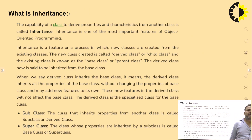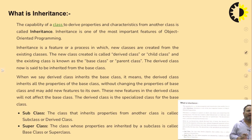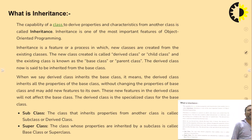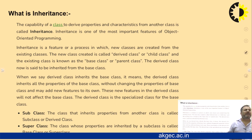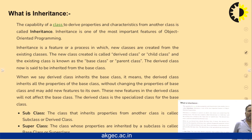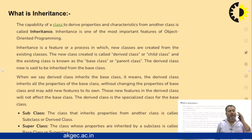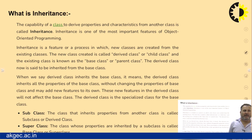Let us see what is inheritance. Inheritance is basically a feature or process in which new classes are created from existing classes. The new class created is called a derived class, or sometimes called child class or subclass. That subclass is going to represent the characteristics and property of another class. The derived class or subclass is going to inherit the property of the base class or parent class.